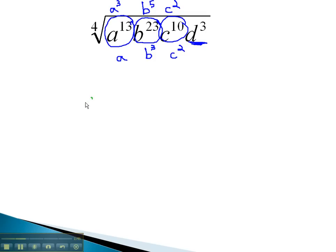We now have outside of the radical a cubed, b to the 5th, c squared, and inside the fourth root we have an a, a b cubed, a c squared, and a d cubed.